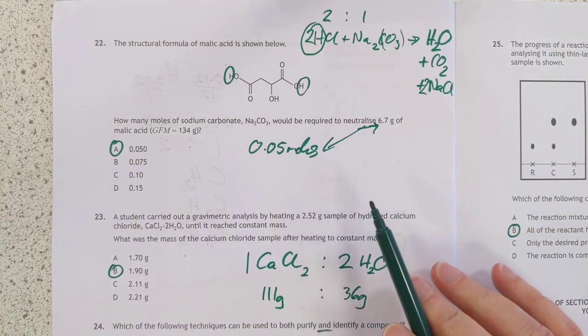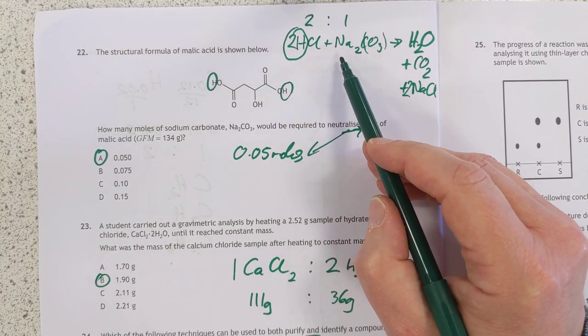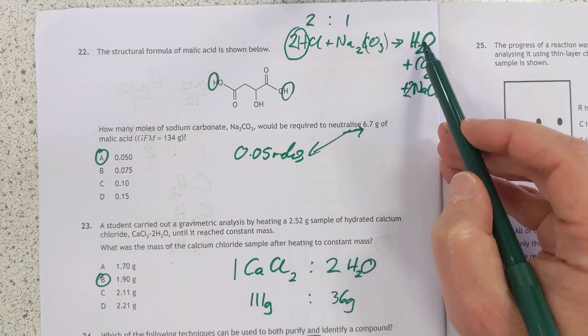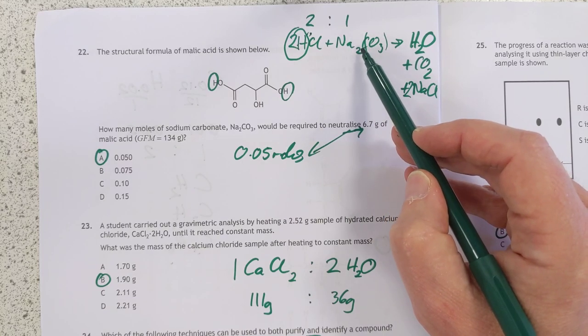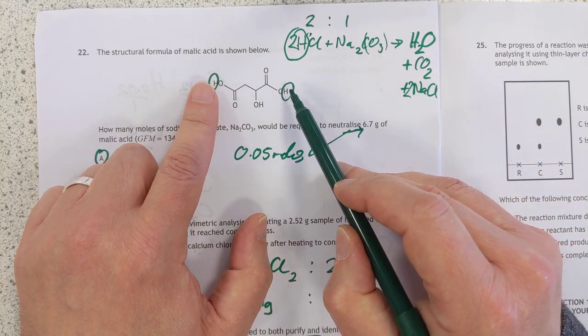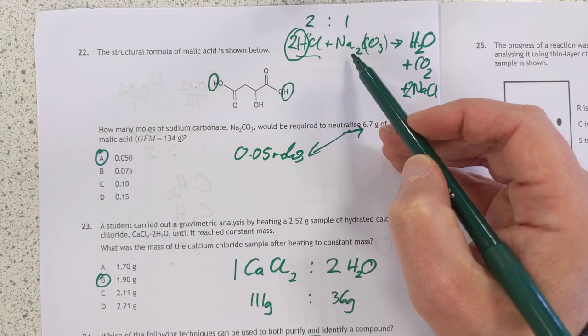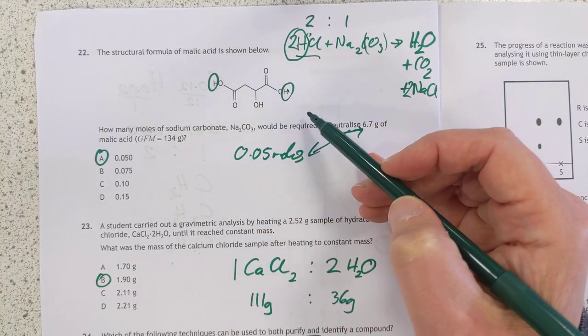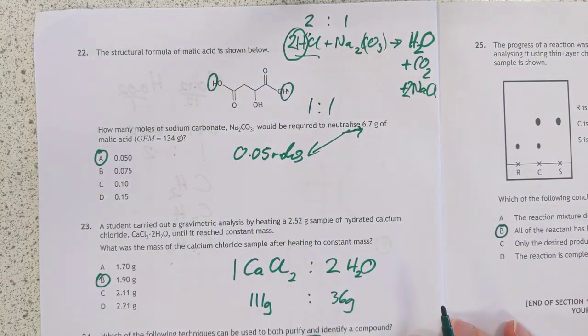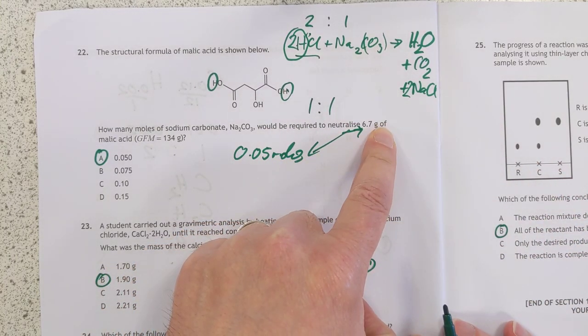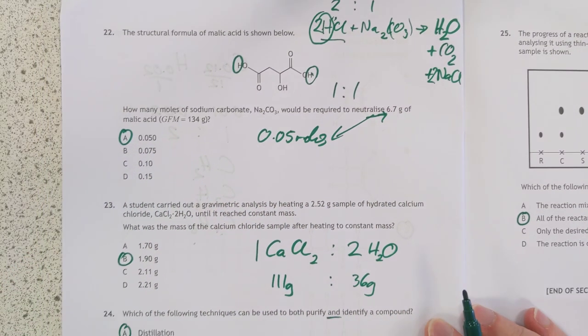The formula of malic acid. Oh yeah, this is an interesting one. Sodium carbonate. If you do a balanced equation for sodium carbonate with a normal acid, you find you require two hydrogen ions for every one sodium carbonate. And malic acid is a dicarboxylic acid. So for normal acids, like hydrochloric acid, you need two moles of this for every one mole of this. But because there are two acidic hydrogens, I'm reckoning we only need one mole of malic acid for every one mole of sodium carbonate. And we've got 0.05 moles of sodium carbonate. Sorry, of malic acid. So I think you'll need 0.05 moles of sodium carbonate. Correct me if I'm wrong.